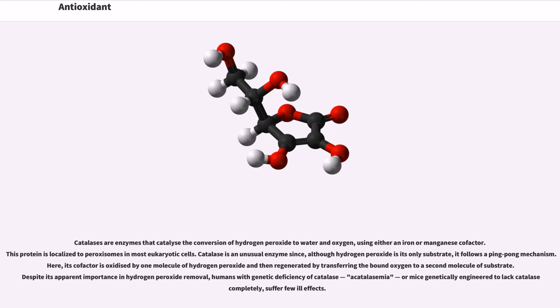Catalases are enzymes that catalyze the conversion of hydrogen peroxide to water and oxygen, using either an iron or manganese cofactor. This protein is localized to peroxisomes in most eukaryotic cells. Catalase is an unusual enzyme since, although hydrogen peroxide is its only substrate, it follows a ping-pong mechanism. Here, its cofactor is oxidized by one molecule of hydrogen peroxide and then regenerated by transferring the bound oxygen to a second molecule of substrate. Despite its apparent importance in hydrogen peroxide removal, humans with genetic deficiency of catalase (acatalasemia), or mice genetically engineered to lack catalase completely, suffer few ill effects.